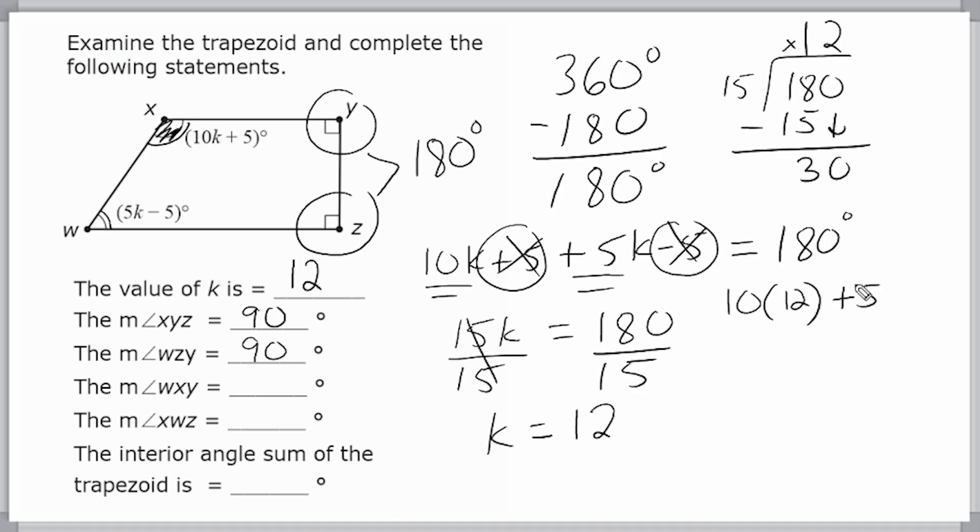And, of course, add 5. So we have 10 times 12, which is 120, plus 5 is 125. So that's how many degrees wxy is equal to, 125.